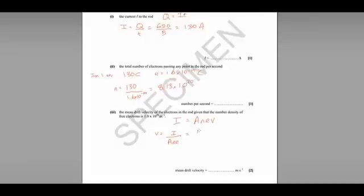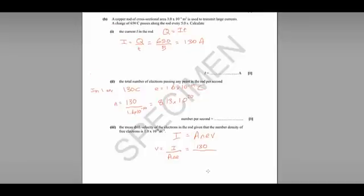Which gives us 130 for the current, divided by the cross-sectional area, which if we scroll back up the question we can see is 3 times 10 to the minus 4, 1 times 10 to the positive 29 multiplied by the charge on an electron, 1.6 times 10 to the minus 19. And that gives us a mean drift velocity of 2.7 times 10 to the minus 5 metres per second.